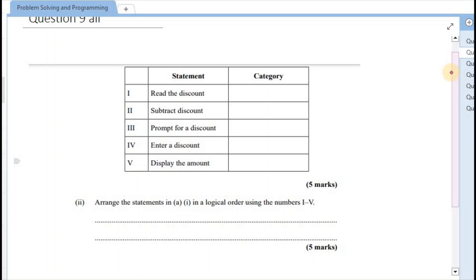Alright, so in this case the first step would have been to prompt the user for a discount. Once the user has been prompted for that, they would then enter the discount. Alright, so they would enter the discount. After they enter that discount, the computer would then read that discount. Alright, so read the discount. Now that is 3.